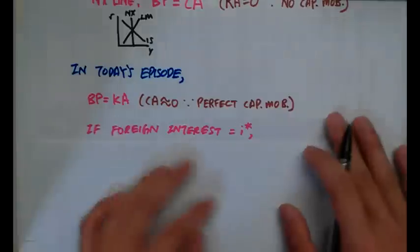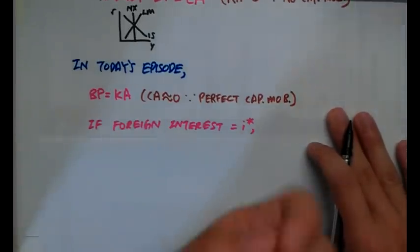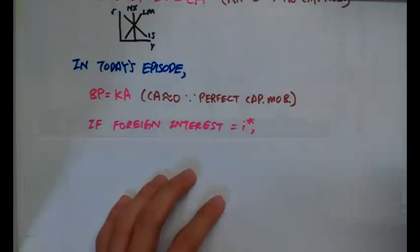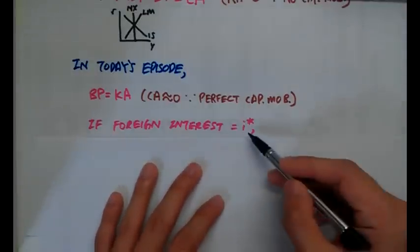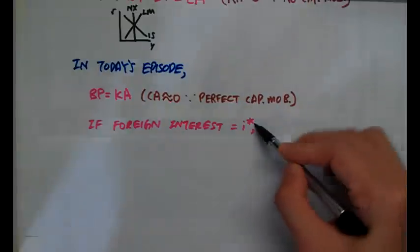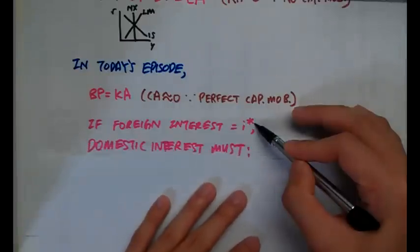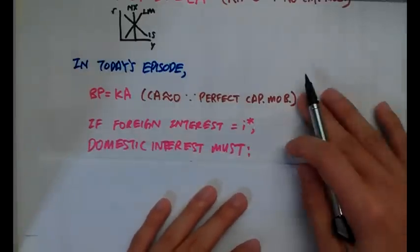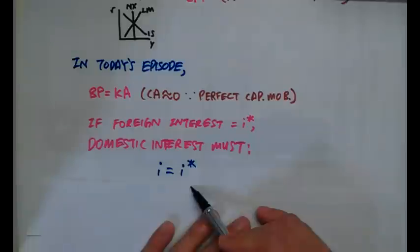Investors look at interest rates, so to keep the capital account equal to zero, the domestic interest rate must equal the foreign interest rate, i-star. If the domestic rate equals i-star, investors are indifferent between investing domestically or abroad, keeping the capital account balanced.